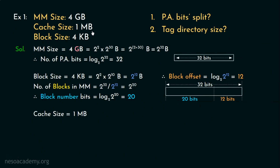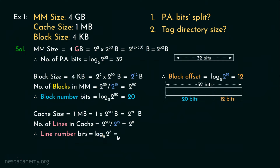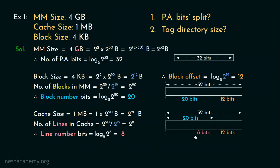The cache size is given as 1MB, which is 2 to the power 20 bytes. To find the number of lines inside the cache, we divide the cache size — 2 to the power 20 bytes — by the block or line size — 2 to the power 12 bytes — which results in 2 to the power 8, because 20 minus 12 is 8. The number of bits required for the line number is log base 2 of 2 to the power 8, which is 8 bits. So 8 bits specify the cache line number where each block is mapped.